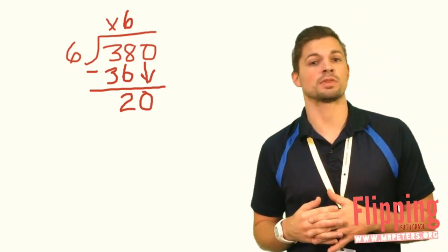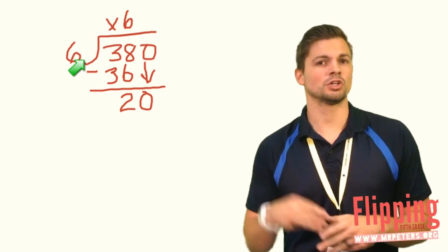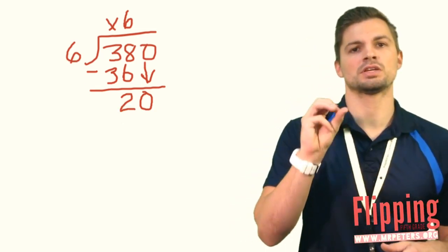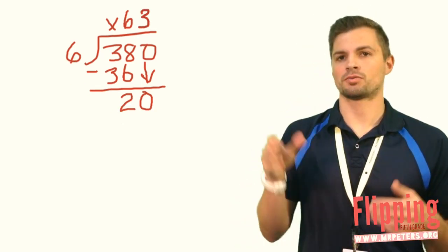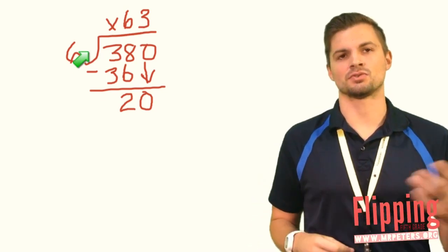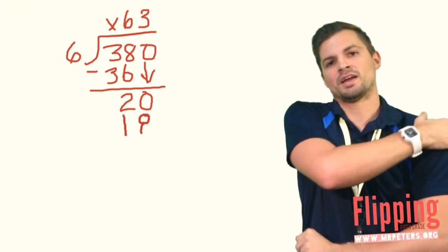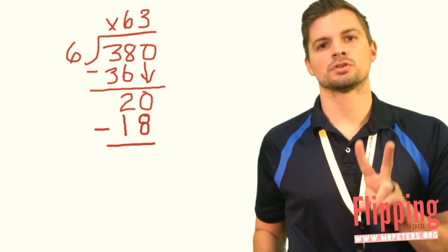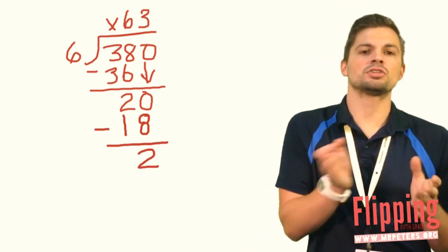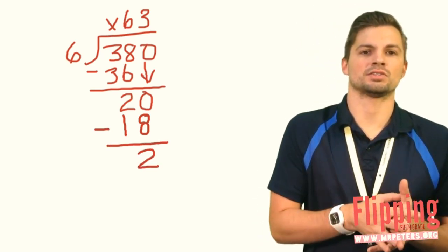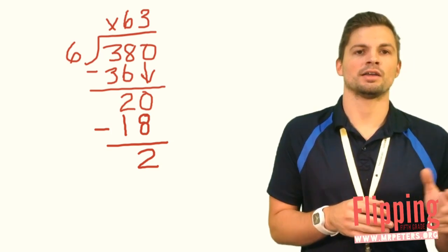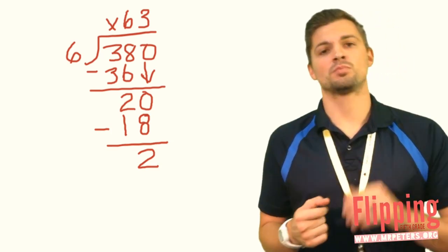How many times does 6 go into 20 without going over? Good. 3 times. 3 times 6 is 18. So again, I do 20 minus 18 to get the answer of 2 again. Now since 2 is less than my divisor of 6, I know that I can stop now and put that as my remainder.